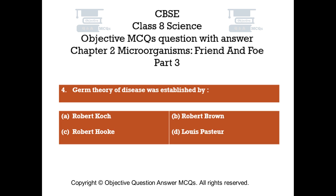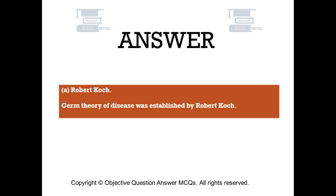Question number 4. Germ theory of disease was established by. Option A: Robert Koch. Option B: Robert Brown. Option C: Robert Hooke. Option D: Louis Pasteur. The right answer is option A — Robert Koch. Germ theory of disease was established by Robert Koch.